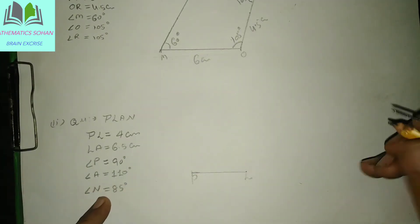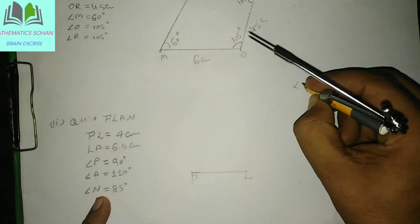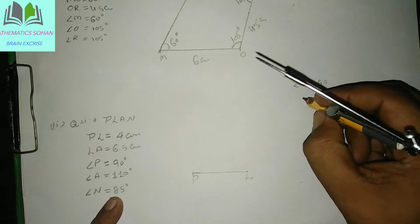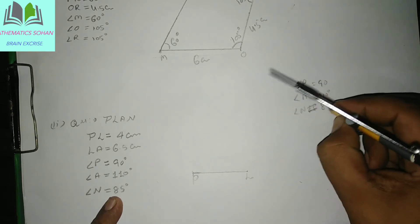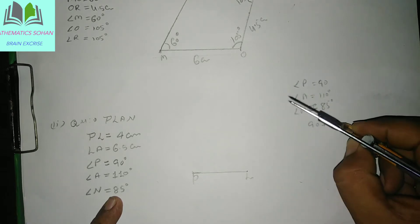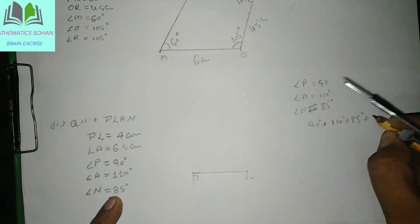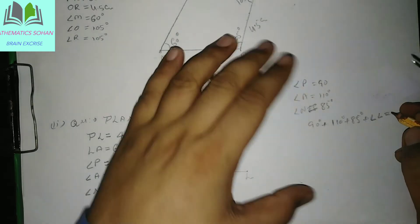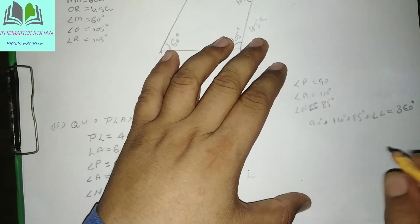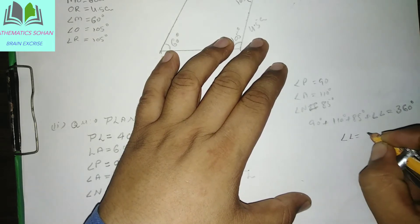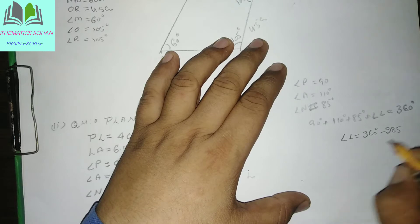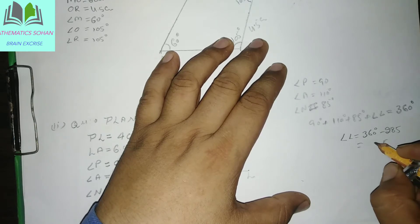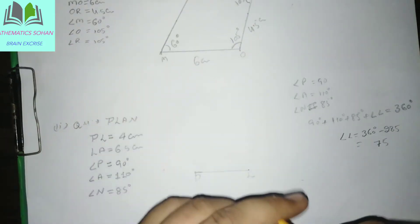Quadrilateral ke dekho 4 angle sum kitna hota — yahan pe hamare paas angle P kitna hota: 90 degree. Angle A kitna hai: 110. Angle N kitna hai: 85 degree. Toh sum kitna hota — 90 degree plus 110 degree plus 85 degree plus angle L is equal to kitna ho jana chahiye: 360 degree. Toh yahan pe angle L kya aajayega — 360 degree minus in dono ka sum 285, isme se minus karenge toh value 75 degree ho jayegi.